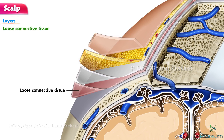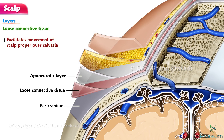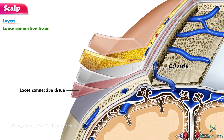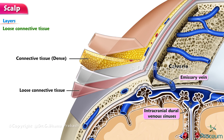Loose connective tissue. A layer of loose connective tissue separates the aponeurotic layer from the pericranium and facilitates movement of the scalp proper over the calvaria. Because of its consistency, infections tend to localize and spread through the loose connective tissue. This layer is traversed by emissary veins connecting veins in the second layer of the scalp with intracranial dural venous sinuses.